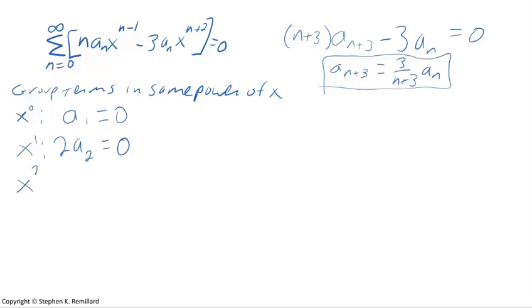Let's look at the x² term. When you have x², in the first term, n has to be 3. 3a_3. And in the second term, if you have x², n=0, minus 3a_0 equals 0. All right, we've gotten some information here. And that information is that a_3 = a_0.